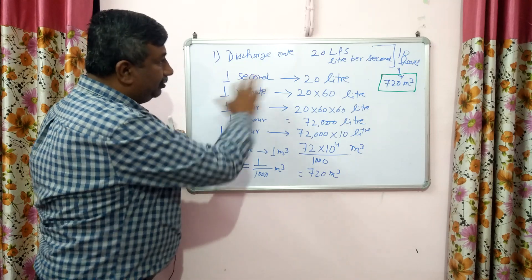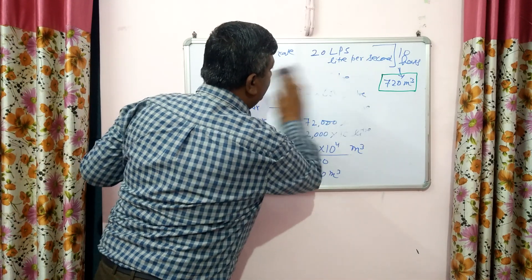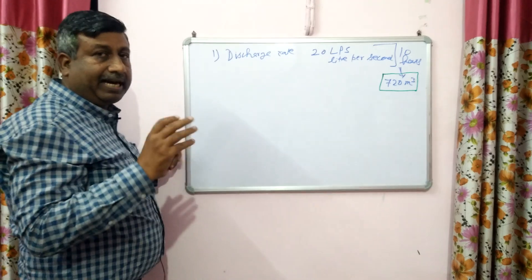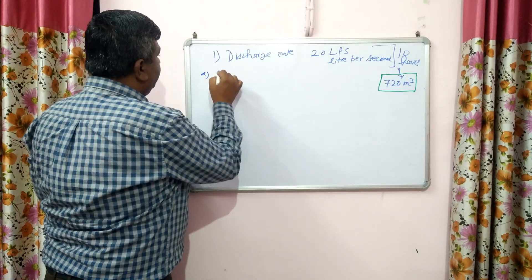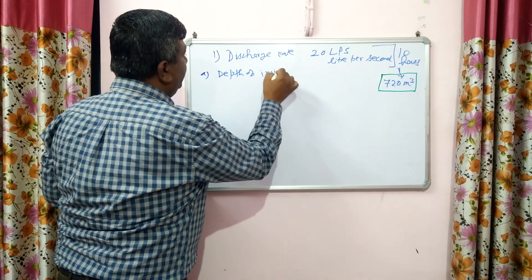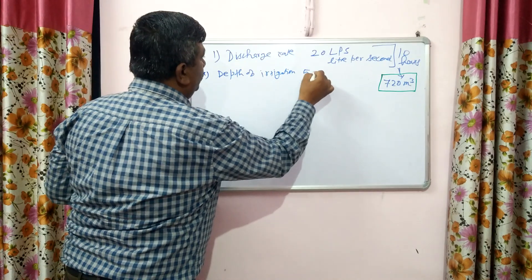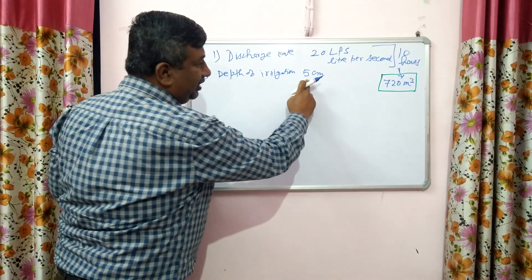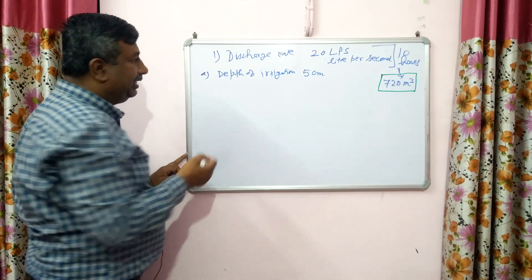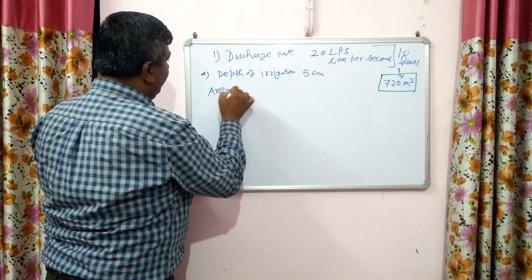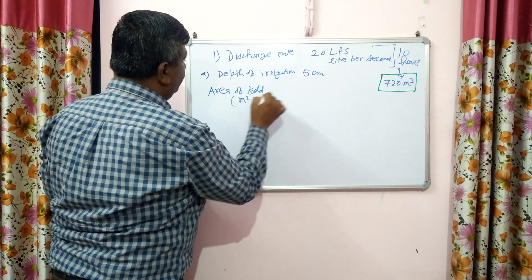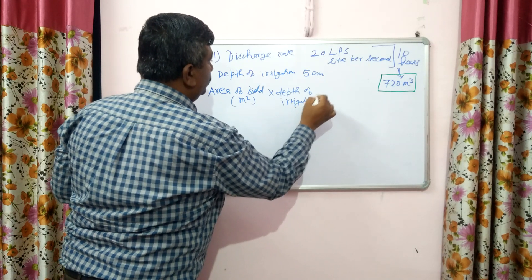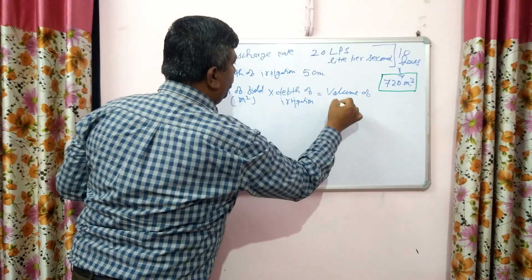The tube well run time may be 8, 6, or 4 hours in a given question. Now, to calculate the area irrigated if depth is fixed: suppose the depth of irrigation is 5 centimetres. Then how much area can be irrigated by this tube well? This is how the question may be asked.